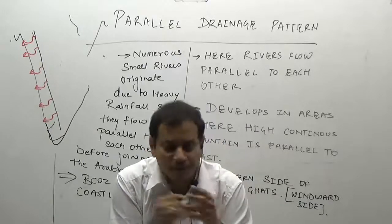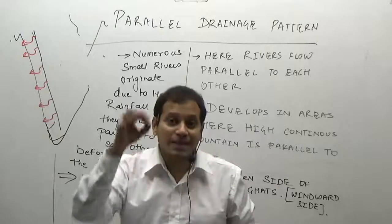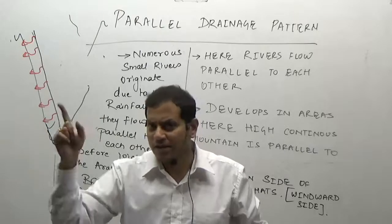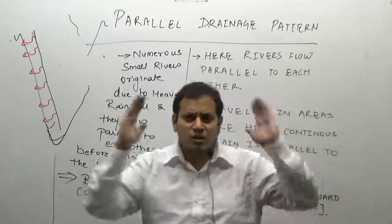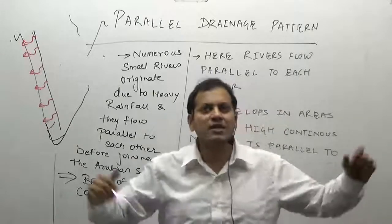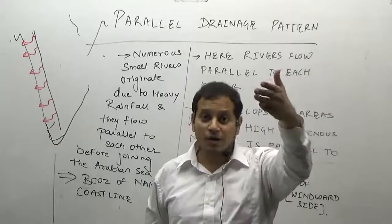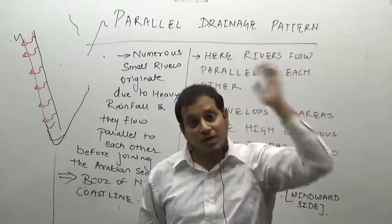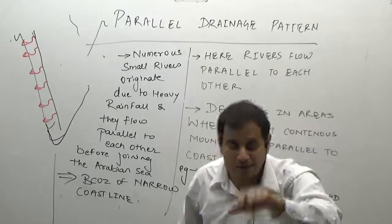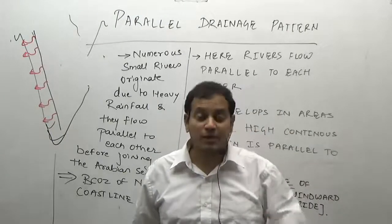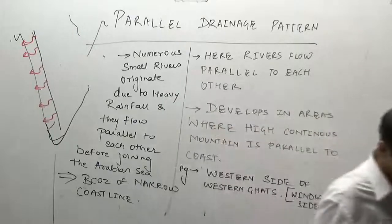Then we have the barbed drainage pattern, in which the tributary joins the main river like a hook — a typical example of river capture. Look at the Indus river and Brahmaputra river. Parallel drainage pattern of the Western Ghat region develops because the coast is so narrow and the Western Ghats are so near to the coastline that rivers are not completely developed — they come and meet the sea, resulting in a parallel drainage pattern. With this we have finished the drainage pattern. The next topic is erosion. Keep revising, keep watching, and keep making notes. Thank you very much.